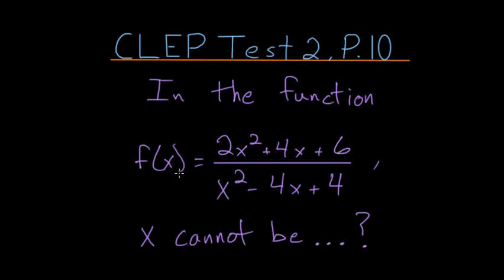The function f(x) is equal to 2x squared plus 4x plus 6, all divided by x squared minus 4x plus 4. x cannot be what numbers?